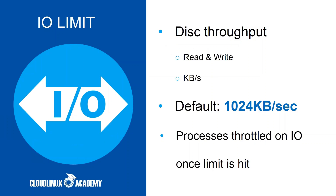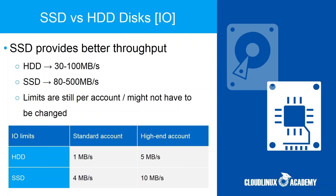IO limits restrict the data throughput for the customer, measured in kilobytes per second. When the limit is reached, processes are throttled — put to sleep — ensuring processes within LVE cannot exceed the limit but do not stop working or get killed; they just work slower. The IO limit only affects disk IO and has no effect on network traffic. It also does not take into consideration any disk cache access, so even if a file is loaded from disk cache 1000 times, it will not be counted towards IO limits. SSD provides better throughput: HDD average speed is 30–100 MB/s while SSD can give 80–500 MB/s.